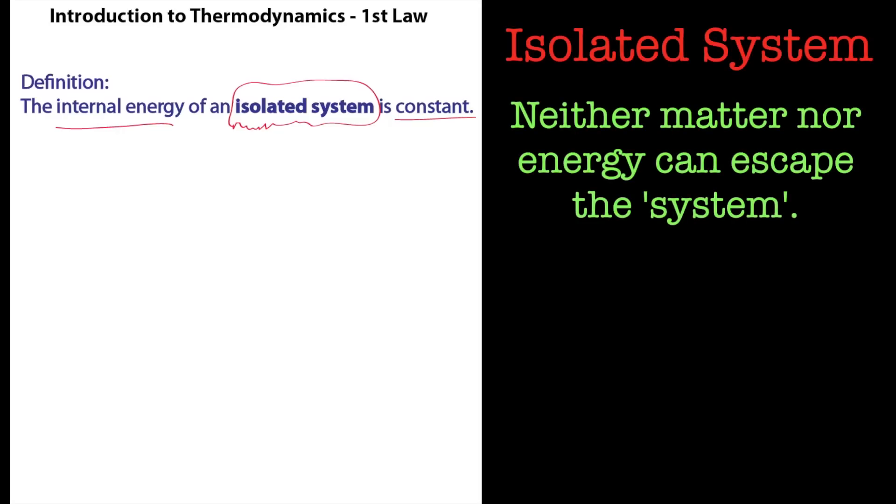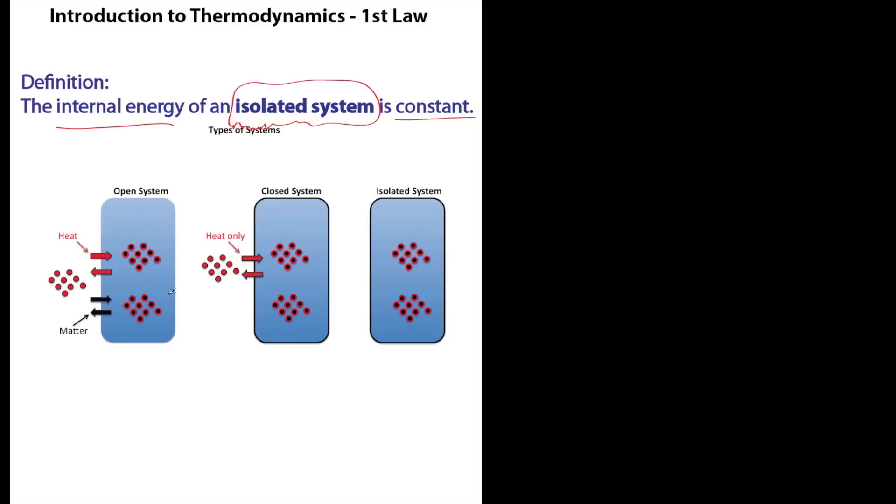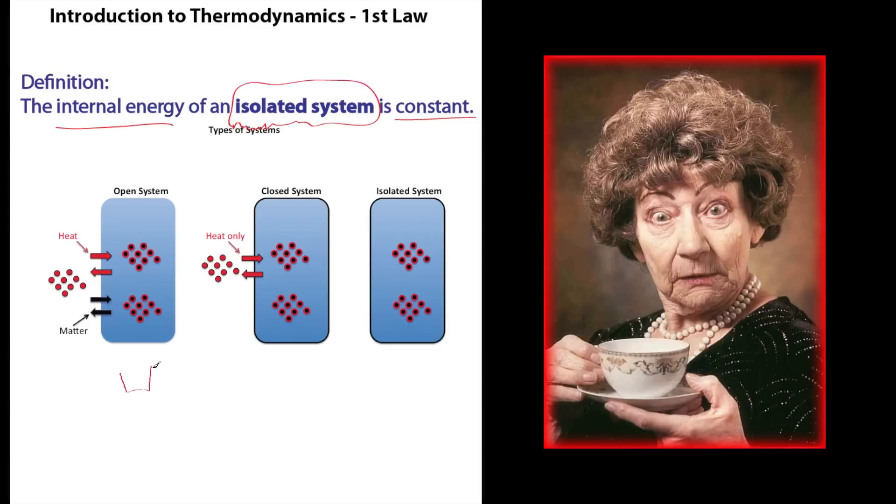We've covered this in previous tutorial but let's have a little recap of an isolated system. These are types of systems you can get. An open system is a bit like a cup of tea. This cup of tea is getting a bit famous with me now, but there's your cup of tea, steam coming off it. Open system. Heat and matter can leave that cup of tea. No worries about that.